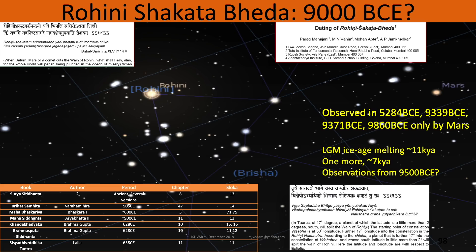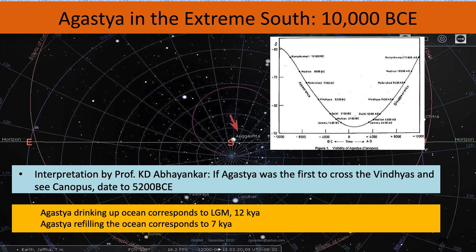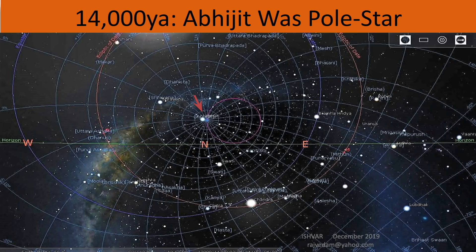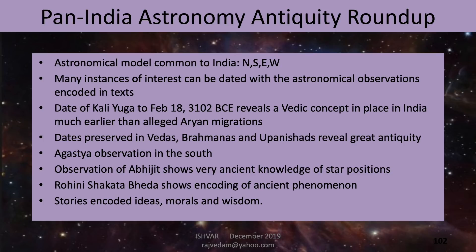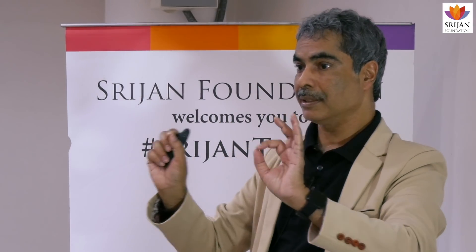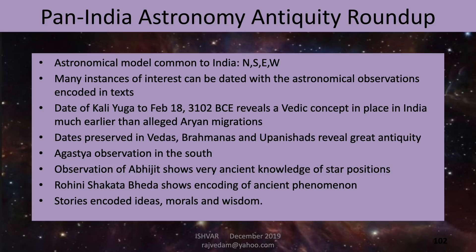One more phenomenon called Rohini Shakata Bheda dates to 9000 BCE — I talked about this in the past so I won't go into much detail. We already talked about Agastya and the deep south. There is one more ancient observation: Abhijit was the pole star, which refers to Abhijit being in the pole star location around 14,000 years ago. So the Pan-Indian Astronomy roundup says the astronomical model is common to India — whether North, South, East or West, everybody used a Nakshatra-Rashi model. There were regional differences in some of the names of Nakshatras and Rashis, but that is about it. Many instances of interest can be dated with observations, and stories encoded ideas, morals and wisdom.